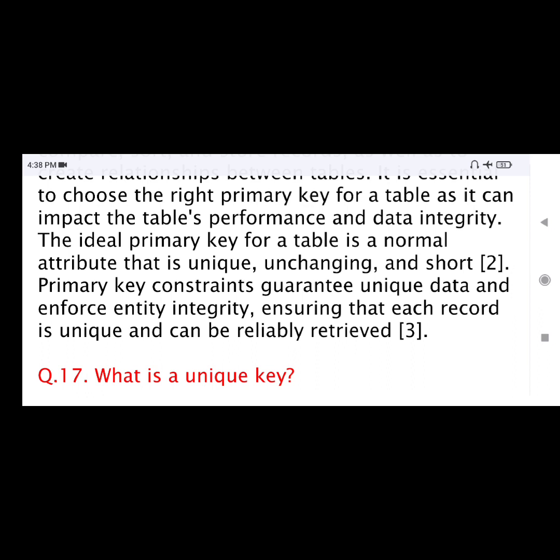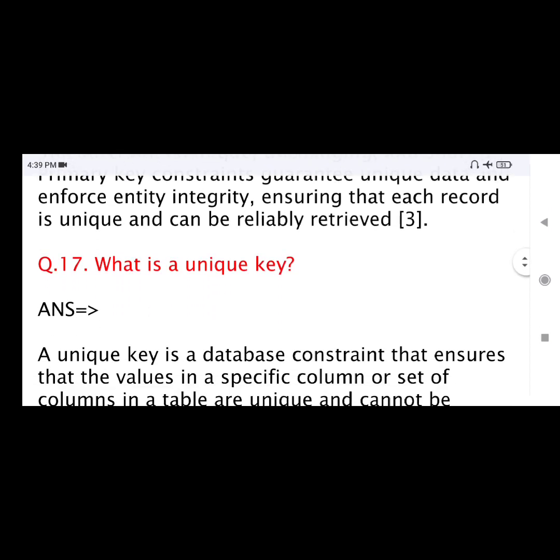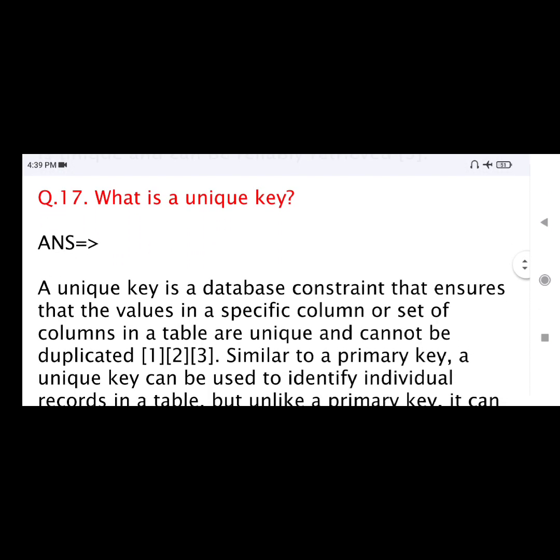The ideal primary key for a table is a natural attribute that is unique, unchanging, and short. The primary key constraint guarantees unique data and enforces entity integrity, ensuring that each record is unique and can be reliably retrieved.